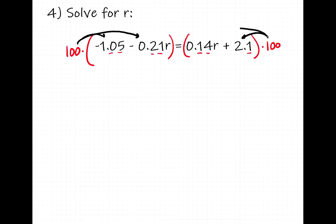So multiplying the entire equation by 100, what we get is negative 105 minus 21r equals 14r plus 210.